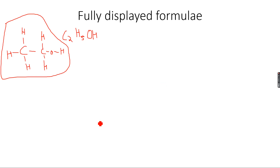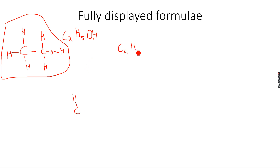Let's take the example of propanoic acid. It's actually C2H5COOH. This is propanoic acid.